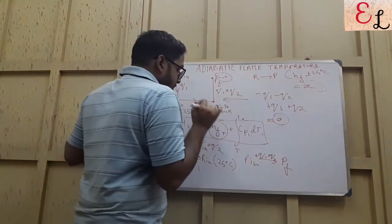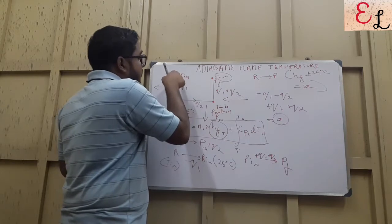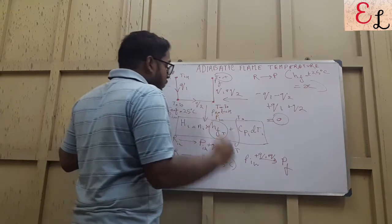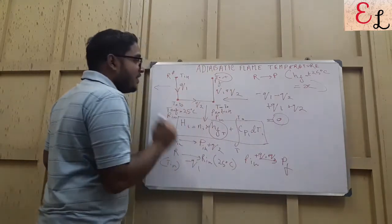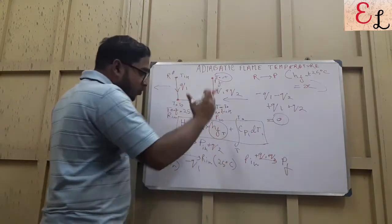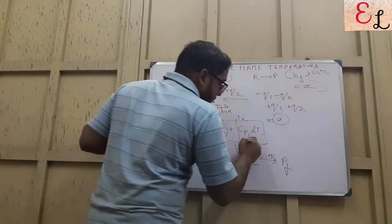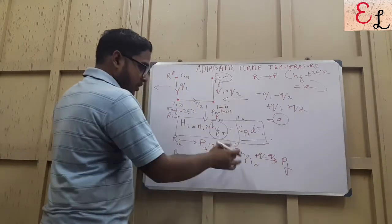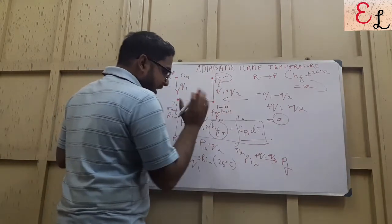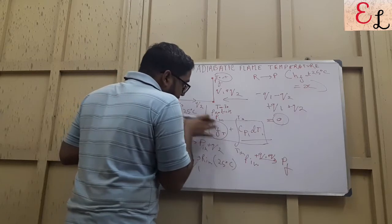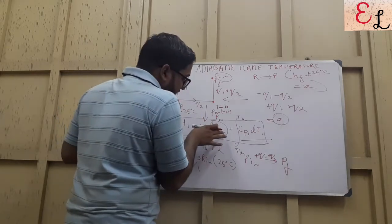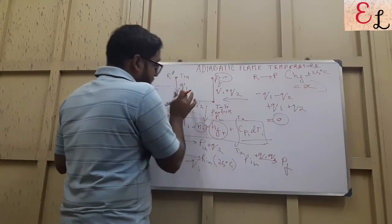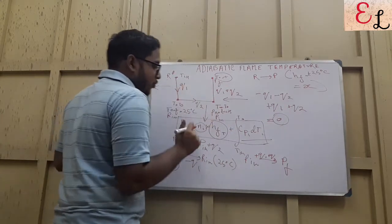We supposedly know the heat of formation from R to P. We know that R to P is a reaction that undergoes, and the heat of formation at 25 degrees Celsius is supposedly known to us. But we do not know the heat of formation at, maybe, 80 degrees Celsius. So what we do is, first we bring it to 25 degrees Celsius — we lose some amount of heat, that is Cp dT from T_in to T0.